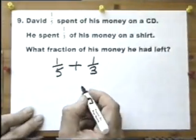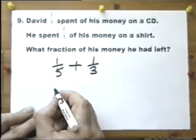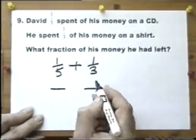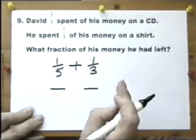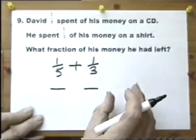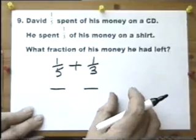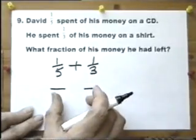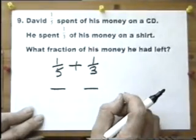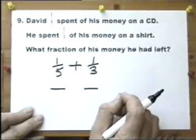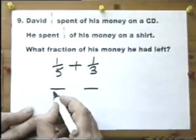Now this is the third time on this exam paper that we've had to do making the bottom number the same. Because if you put fractions in order of size, or you add them, or you subtract them, one way of doing it is to get the bottom numbers the same. The lowest common denominator. The lowest number that five and three go into is fifteen.